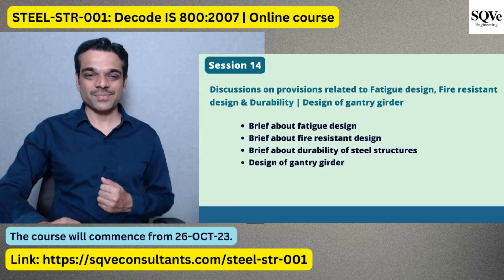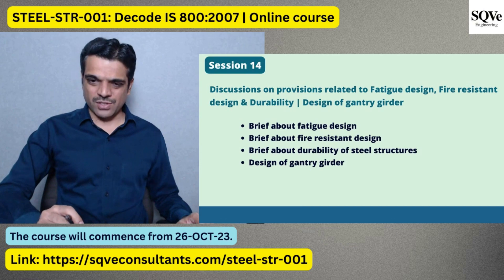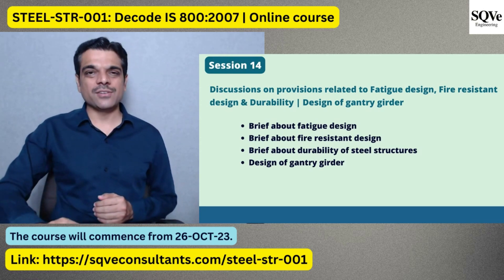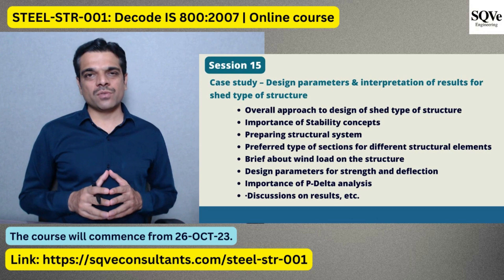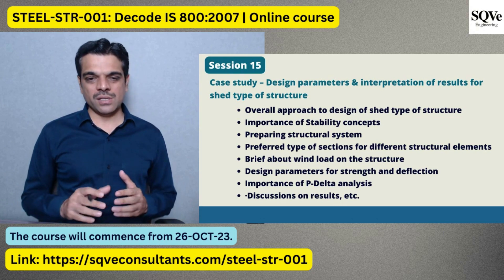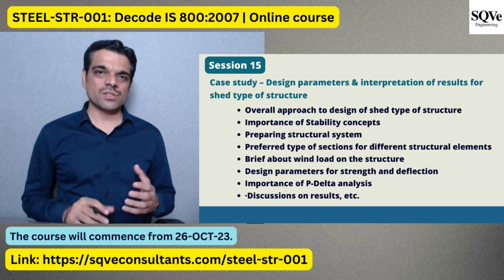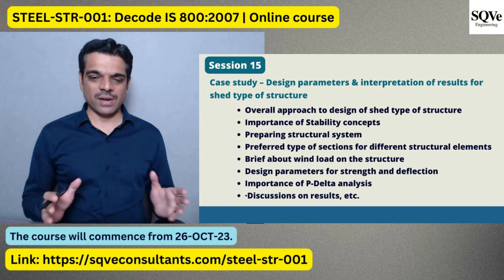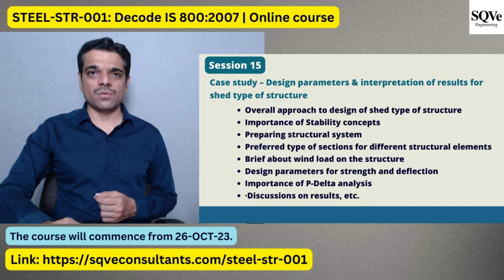The next session briefly covers fatigue design, fire resistant design, durability aspects, and design of gantry girders. Following this, we will examine a case study of a shed-type structure, covering the overall approach, stability concepts, structural system preparation, preferred section types, wind load application, design parameters for strength and deflection, and the importance of P-delta analysis and how it should be properly carried out for steel structures.